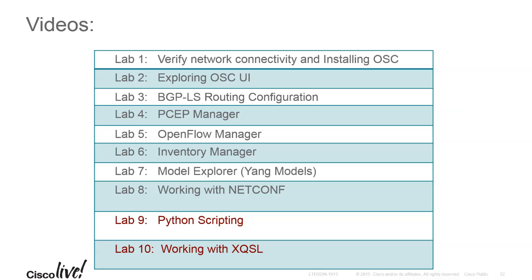Lab ten is XQSL, which allows you to pull information just like you were pulling it from a database. You can filter and pull specific information, save it to a file, and it's very powerful if you want to work with network data as though it were a relational database.